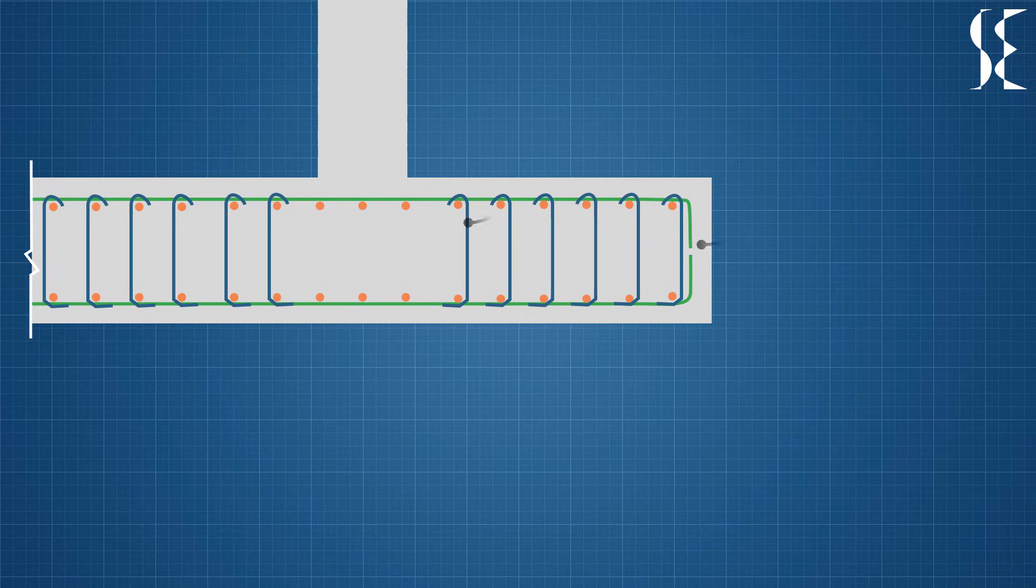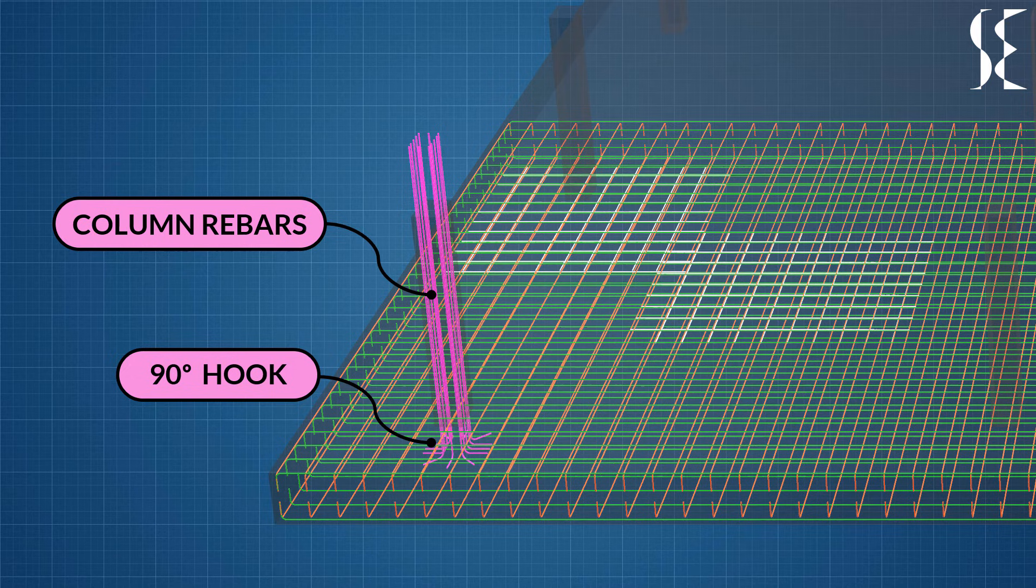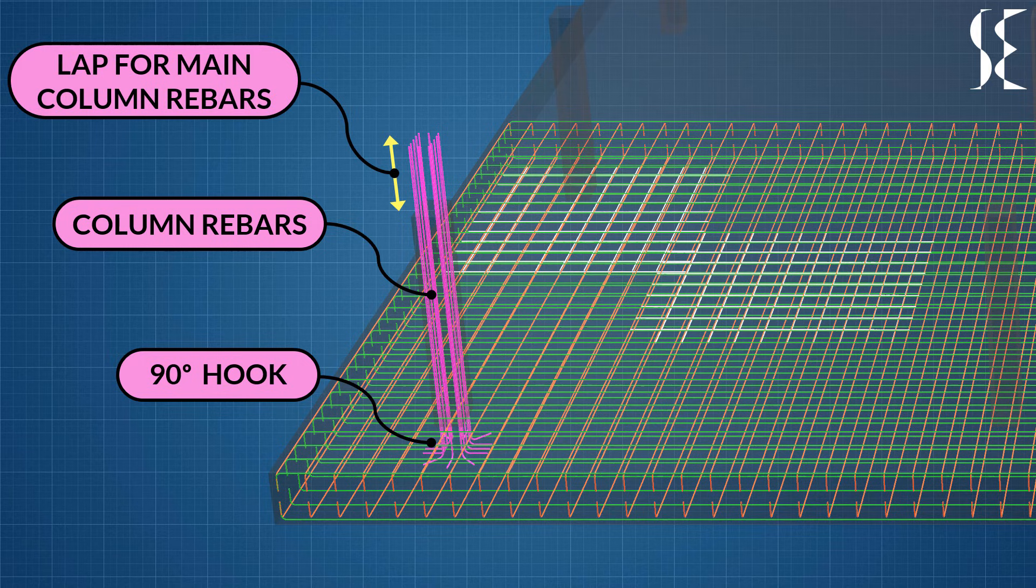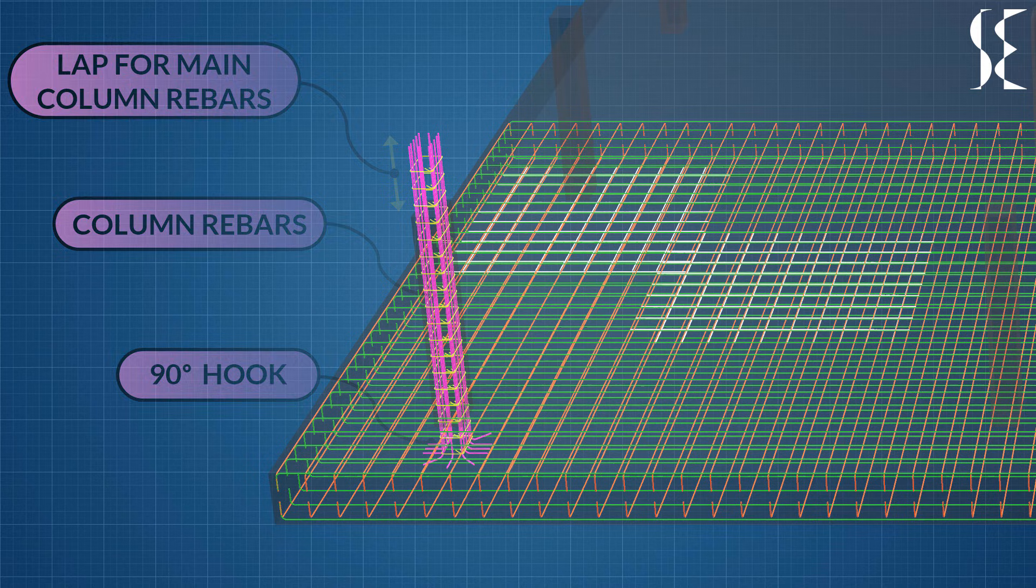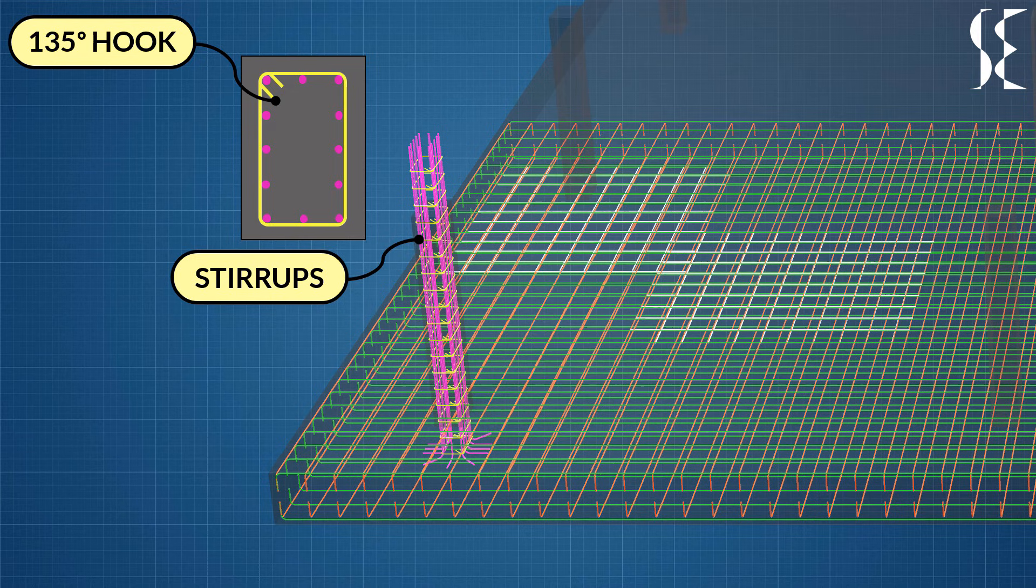Now let us talk about column reinforcement which are embedded in the raft. The column longitudinal rebars start with a 90-degree hook in the raft for better anchorage with concrete. They are extended above the footing for sufficient lap length with main column reinforcement. If the above columns are of steel, the lap reinforcement is not needed. Lastly, we see stirrups which start right from the bottom of the raft. They have a 135-degree hook which is a must for columns. They tie the column longitudinal reinforcement and resist the shear forces in them.